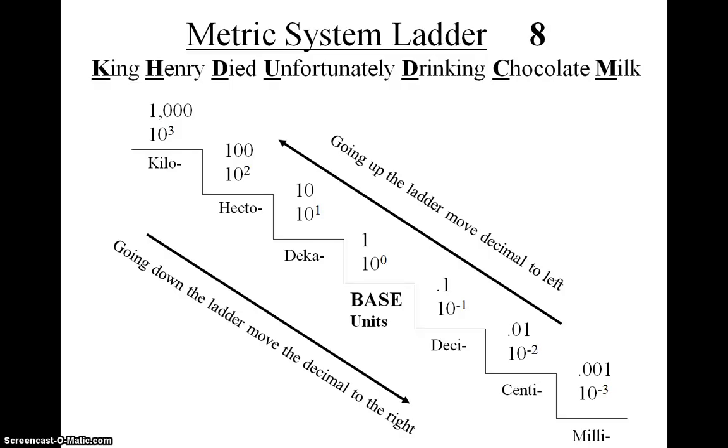So the K stands for kilo, H for hecto, D which is usually written with a capital D is DECA. Sometimes you see it as D with a little K as well. U is for the base unit. D and typically written with a small d is DECI. C is CENTI and M is MILLI.